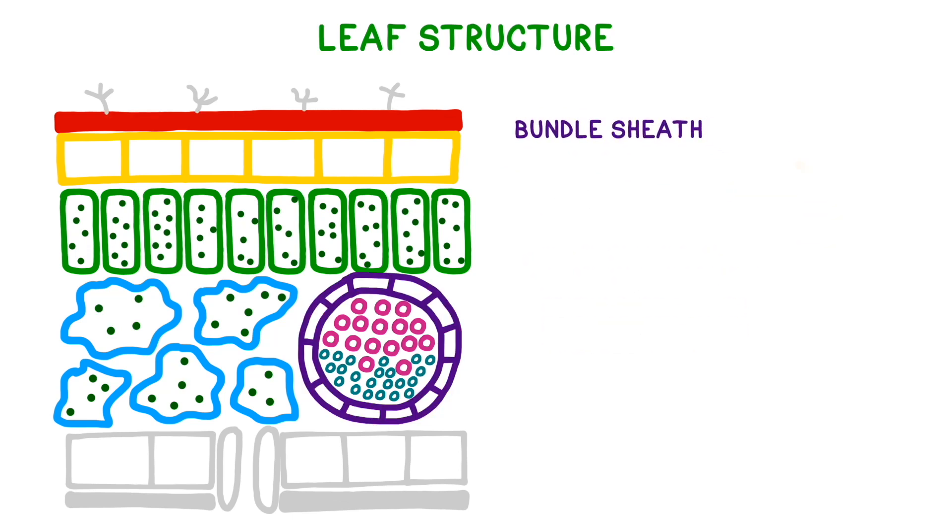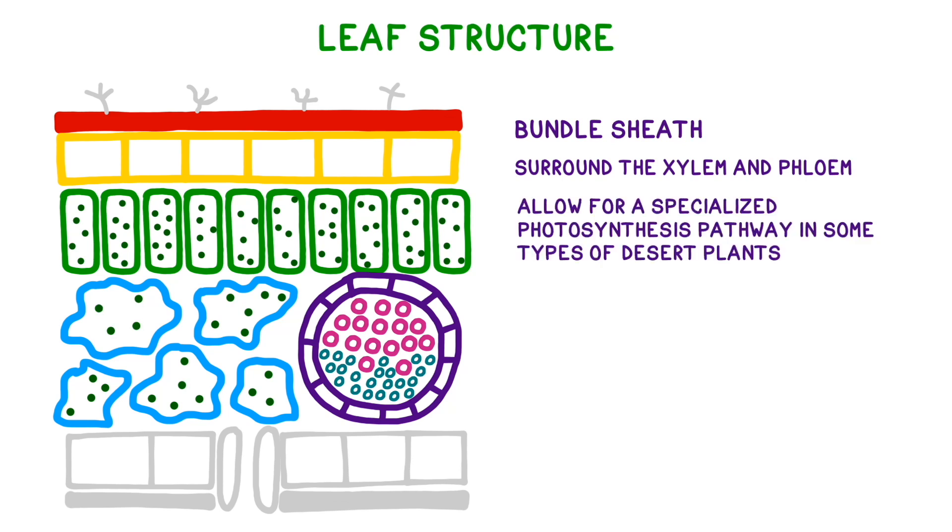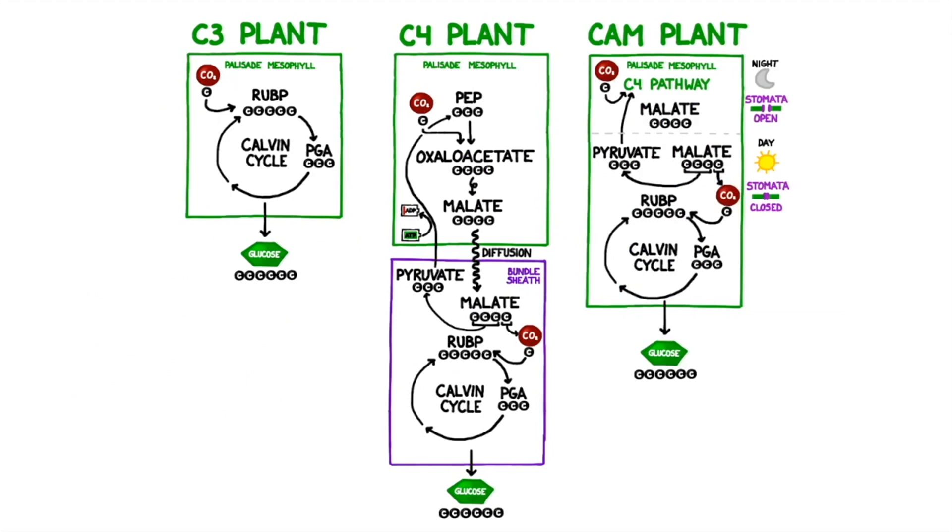Surrounding the xylem and phloem is a network of tightly packed cells called the bundle sheath cells. In some plants, bundle sheath cells allow for a specialized version of photosynthesis that allow plants to survive in arid or dry environments. We can see the role that bundle sheath cells play in this diagram of the C4 photosynthesis pathway.